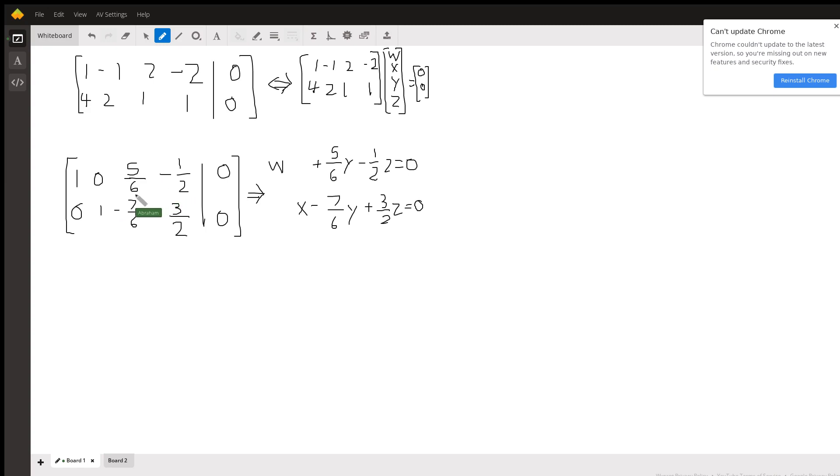And this is what it is right here. The interpretation of this here is these two equations. This tells us that w plus 0x plus 5/6y minus 1/2z equals zero, and similarly with the other equation.